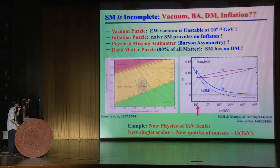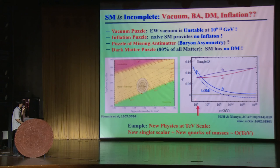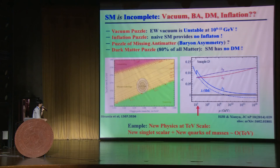Concerning vacuum stability: the standard model is currently in a meta-stable state. This indicates the possibility of including some TeV-scale new physics that can modify the running of the Higgs self-coupling. A complete example is using supersymmetry to include additional TeV-scale particles.